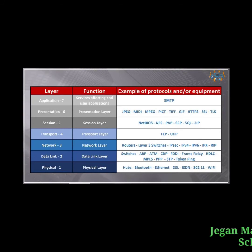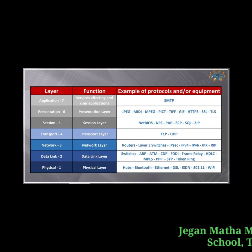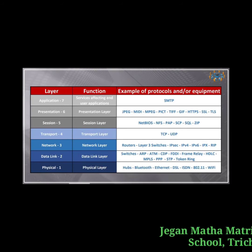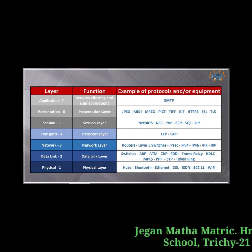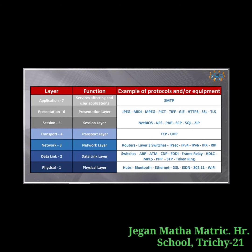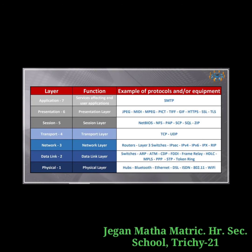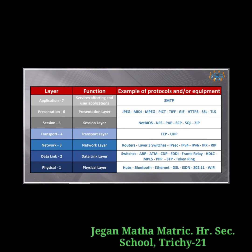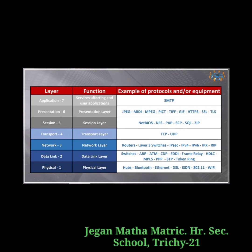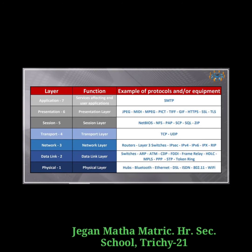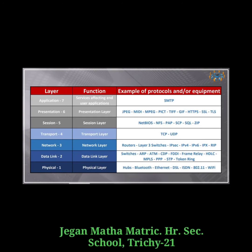Now let us see some functions and example protocols for each layer. For the physical layer, we use Bluetooth, Ethernet, DSL, Wi-Fi, and ISDN. For the data link layer: switches, ARP, ATM, CDP, FDDI, frame relay, STP, and token ring.